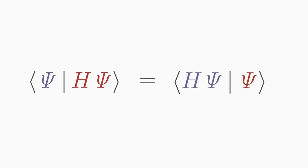Such an operator, which can be shifted back and forth in the scalar product without changing the mean value, is called a Hermitian operator.